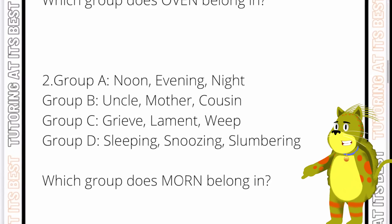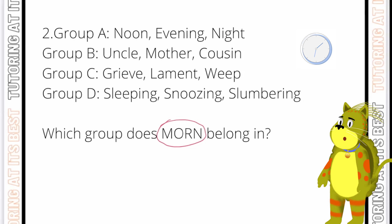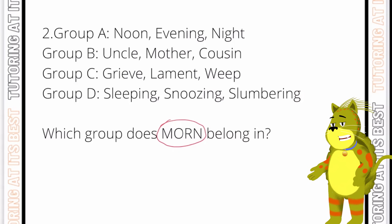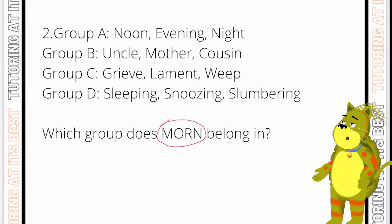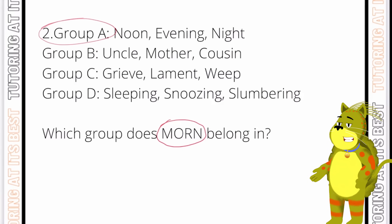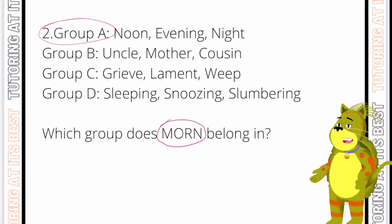Question number two: we've got the word 'morn'. If you take a look at all of the words in group A, they describe parts of the day. 'Morn' is in fact an old-fashioned word for morning — you'll see it most often in poetry — so it belongs in group A. Now, if we take a look at group C, those are things you might do after the loss of a loved one, and 'mourn' spelled m-o-u-r-n would go in there. Hopefully you didn't get confused on that one!